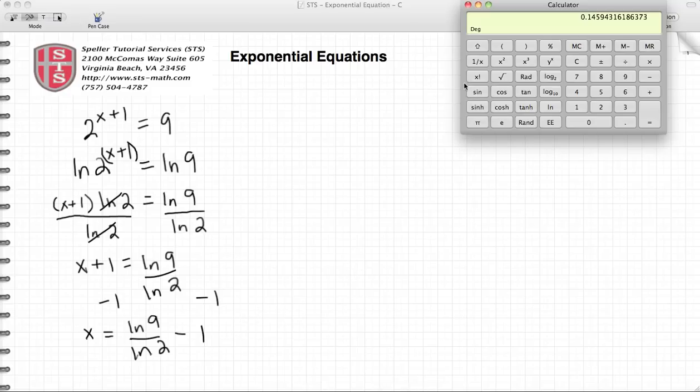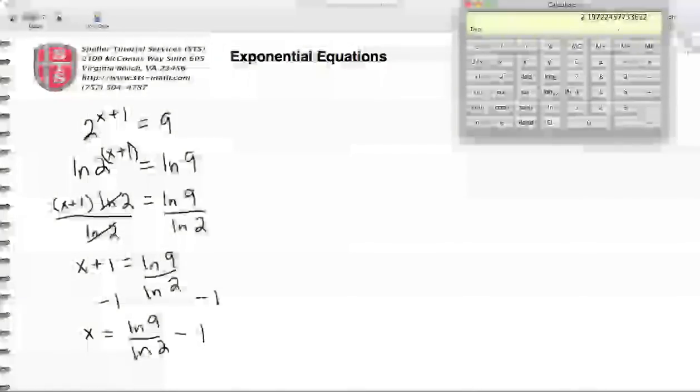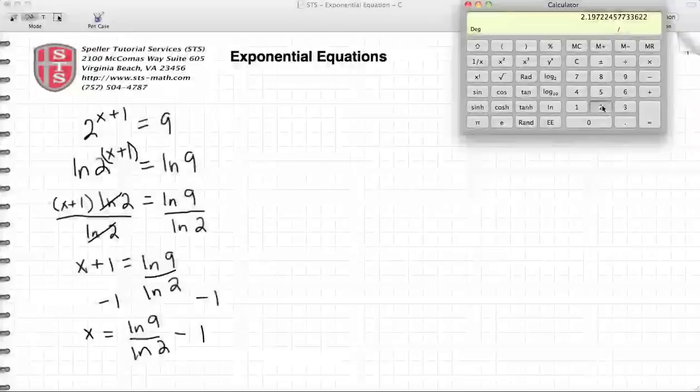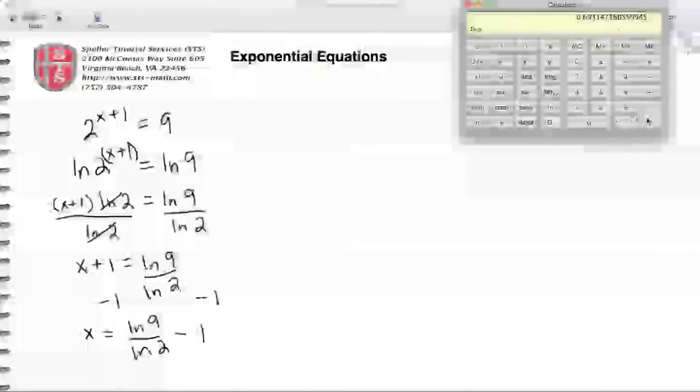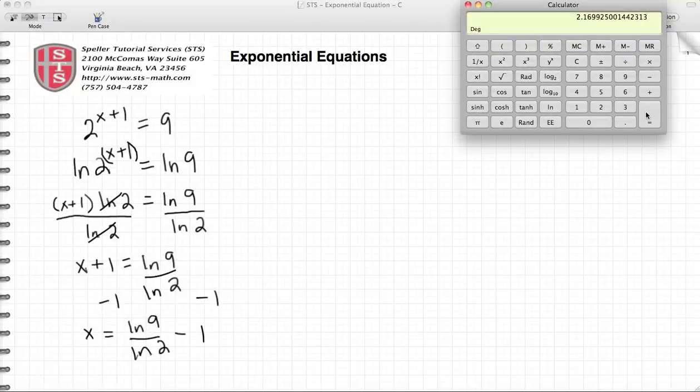We're going to call up our calculator here because we're going to find out what the approximate value of x should be. I'm going to go ahead and clear my calculator. We're going to press 9, take the natural log of that, divide that value by 2, take the natural log of that, equals, and then we're going to subtract 1 off of that. And we see that comes out to be 2.169.